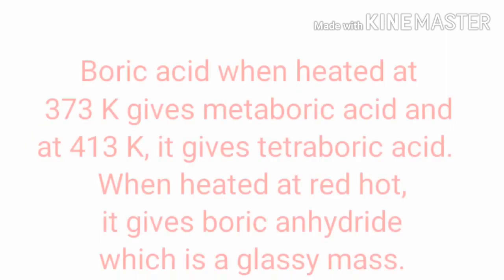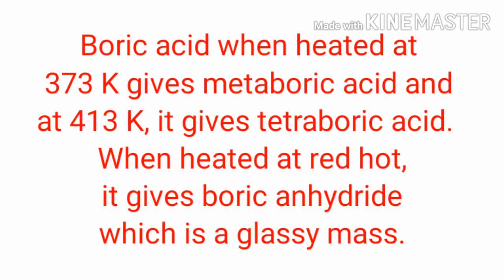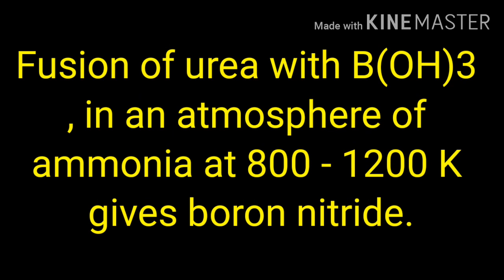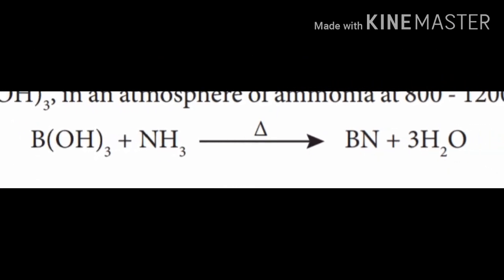Second reaction: NaOH plus H3BO3 gives Na2B4O7 plus H2O (sodium tetraborate). Action of heat: boric acid when heated at 373 K gives metaboric acid (HBO2); at 413 K gives tetraboric acid (H2B4O7); when heated at red hot it gives boric anhydride (B2O3), which is a glassy mass. Action of ammonia: fusion of urea with B(OH)3 in an atmosphere of ammonia at 800–1200 K gives boron nitride. Reaction: B(OH)3 plus NH3 when heated gives boron nitride plus H2O.